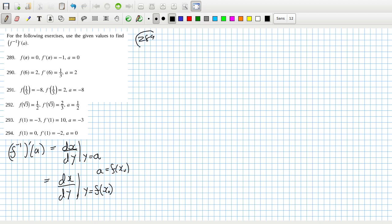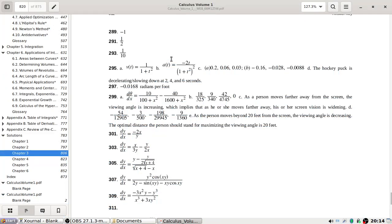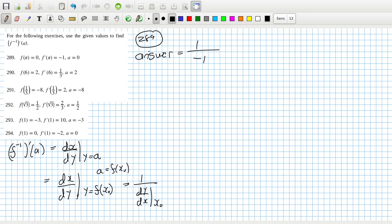So like in the first one, 289, the answer would be dx/dy. And of course, that would equal one over dy/dx evaluated at x zero. So in 289, the answer would be one over the derivative.